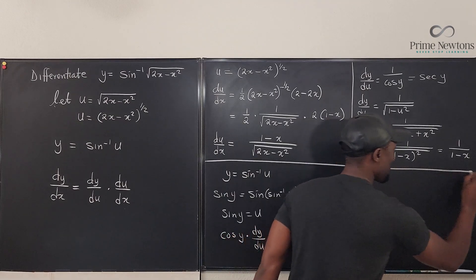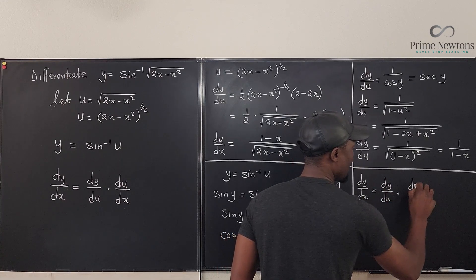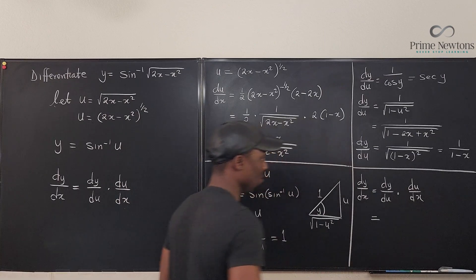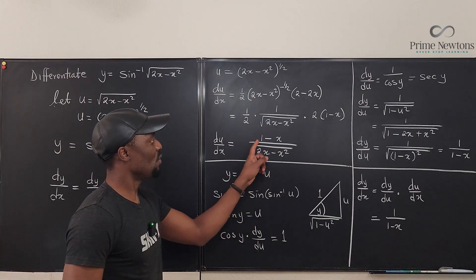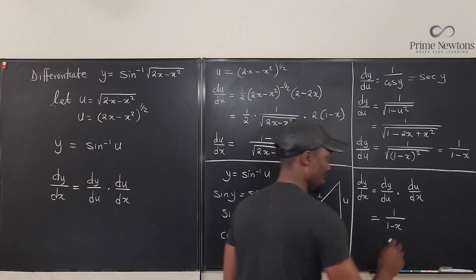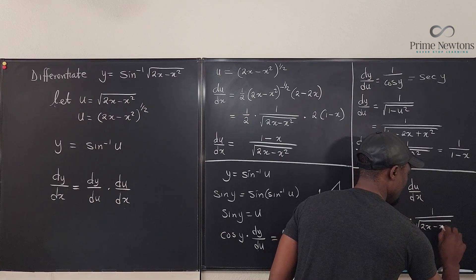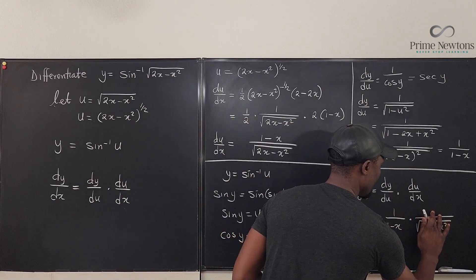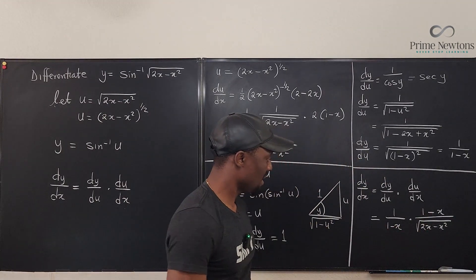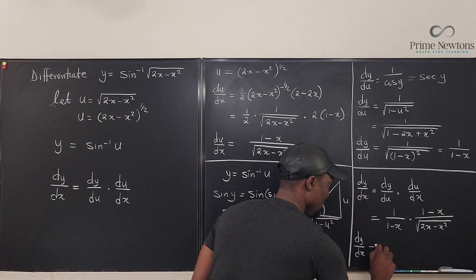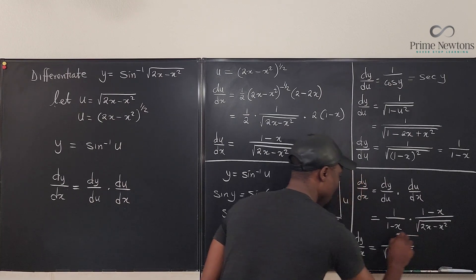So now we can compute dy/dx. dy/dx equals dy/du times du/dx. Which is equal to, what's dy/du, 1 over 1 minus x. And what is du/dx? It's 1 minus x over the square root of 2x minus x squared. It is times 1 over the square root of 2x minus x squared. Sorry, 1 minus x. Rather. So you have 1 minus x. So, this cancels this. And it looks like the derivative of that function is just 1 over the square root of 2x minus x squared. Interesting.